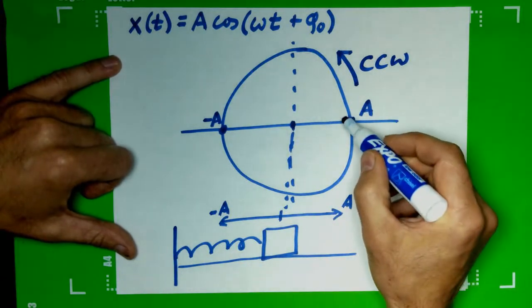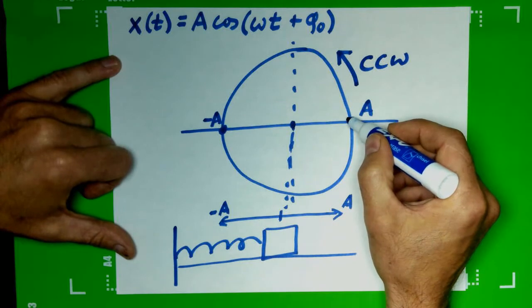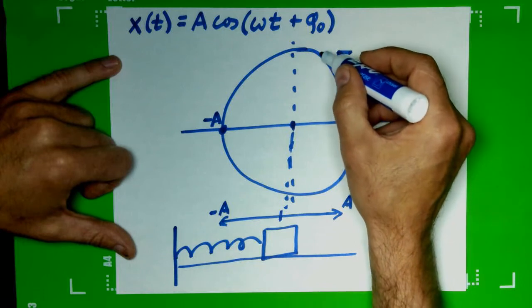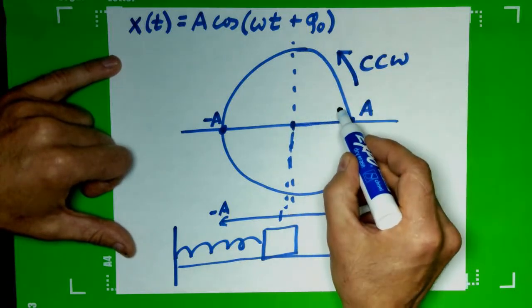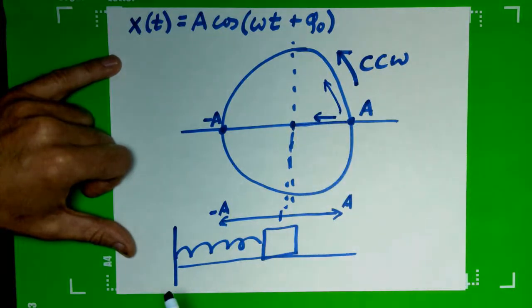So if we think about this motion as being something on a circle moving counterclockwise, then as it moves counterclockwise, its horizontal component approaches zero. So as it moves this way, the horizontal component approaches zero. And that's what the block would do. It would be over here, and it gets pulled towards zero.